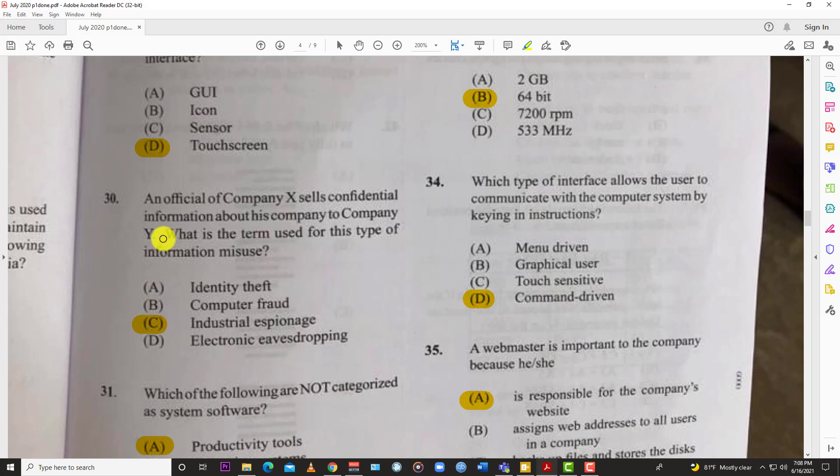The last one for this video, number thirty: an official of company X shares confidential information about his company to company Y. What is the term used for this type of information misuse? Of course the best answer is industrial espionage - companies spying on companies to get the leg up.